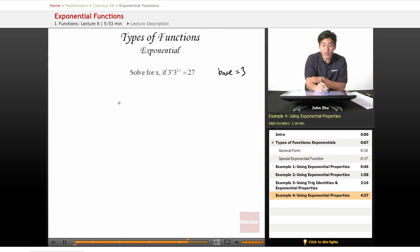So for this one, we know that 3 to the x plus 2x equals 27. And just like the first example, 27 can have a base of 3, and that would be raised to the third power.